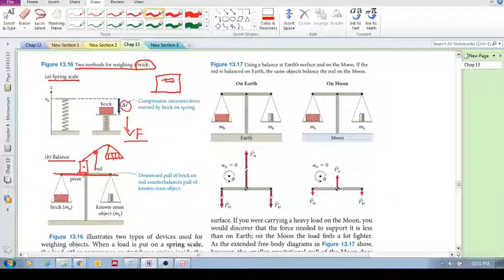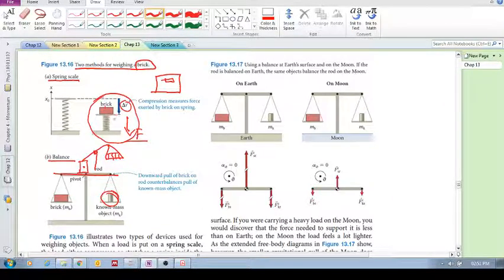Now the difference between these two is that if you put this measurement technique, the spring scale, on Earth or if you put it on the Moon, you are going to get two different readings because the force that's pulling it down will be the force of gravity.